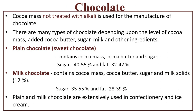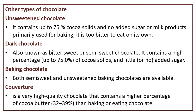Chocolate: cocoa mass not treated with alkali is used for the manufacture of chocolate. There are many types of chocolate depending upon the level of cocoa mass, cocoa butter, sugar, milk, and other ingredients added. Plain chocolate (sweet chocolate) contains cocoa mass, cocoa butter, and sugar — 40 to 55% sugar and 32 to 42% fat. Milk chocolate contains cocoa mass, cocoa butter, sugar, and milk solids of 12%, sugar 35–55%, and fat 28–39%. Plain and milk chocolates are extensively used in confectionery and ice cream.